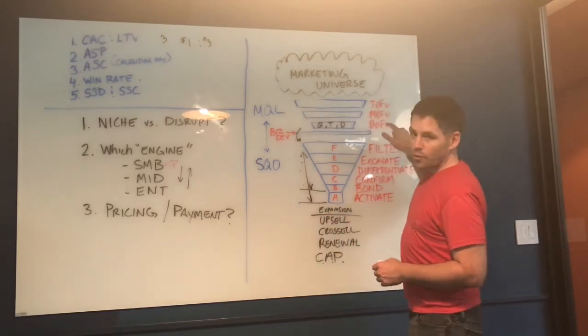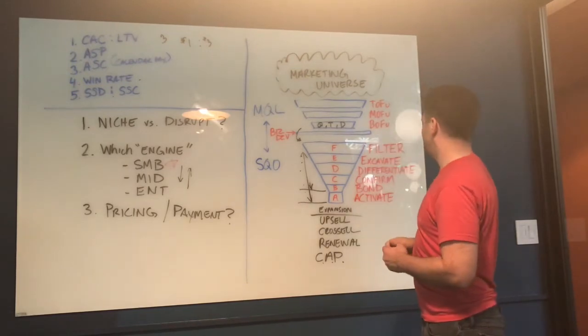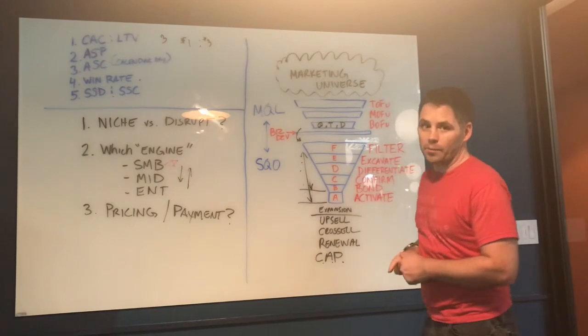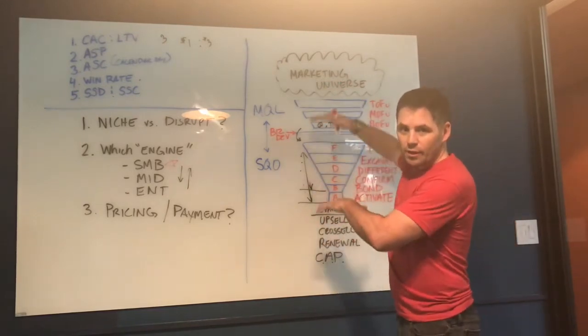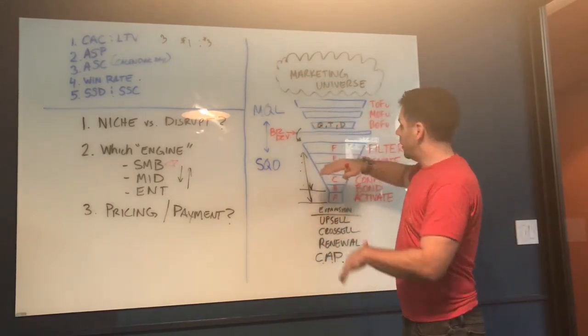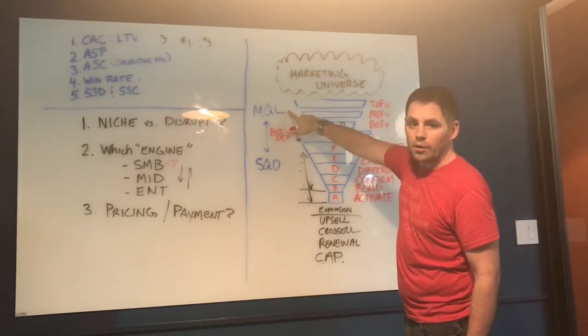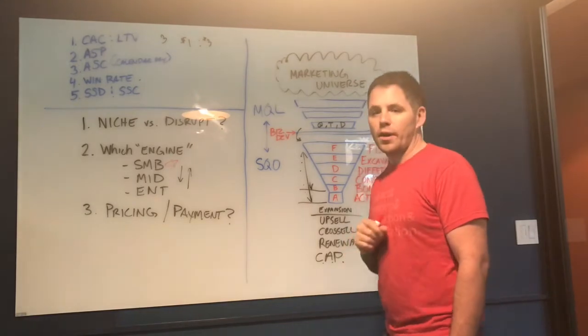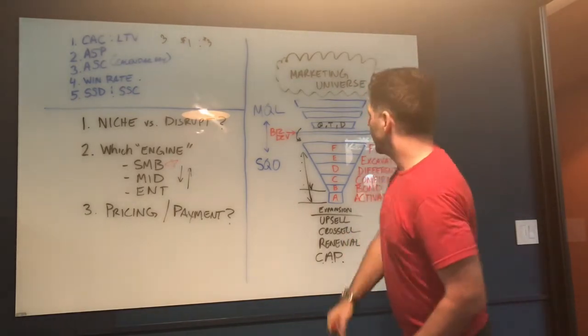But this is the tofu, mofu, and bofu. Those are HubSpot borrowed terms. Top of the funnel, middle of the funnel, bottom of the funnel. It represents different levels of consumption in the MQL or marketing qualified lead space. This is before they're recognized as a sales qualified opportunity in your pipeline, right?